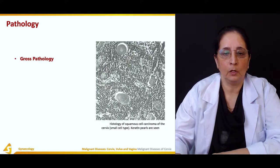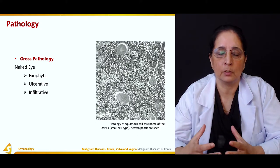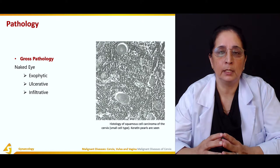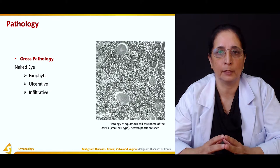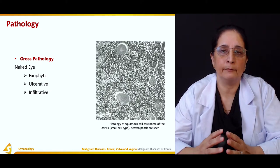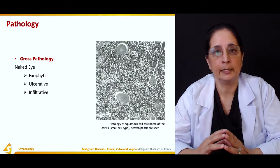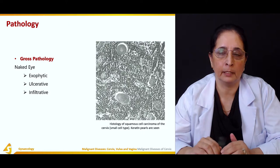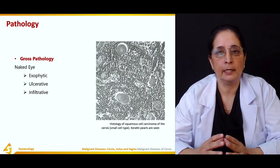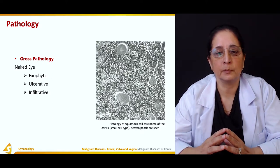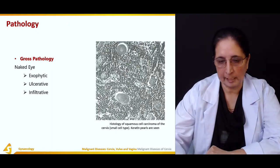Keratin poles are present in the cervical squamous cell carcinoma. Then the gross pathology, which is the naked eye appearance — how it looks without the help of a microscope. Usually we have exophytic lesions, ulcerative lesions or ulcers, or it can be infiltrative, infiltrating different structures and parts.